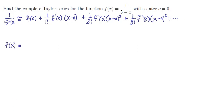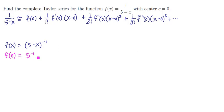Let's start with our function f(x) = (5 minus x) to the minus 1 — written this way to make differentiation easier. That means f(0) is 5 to the minus 1, or 1/5, and that goes in the first spot of our series.